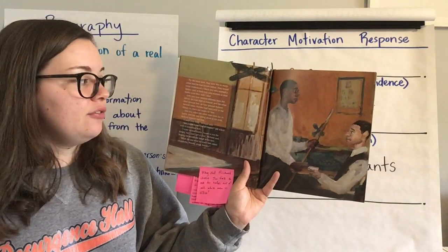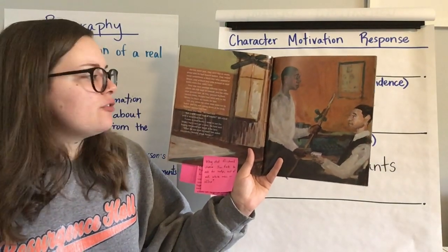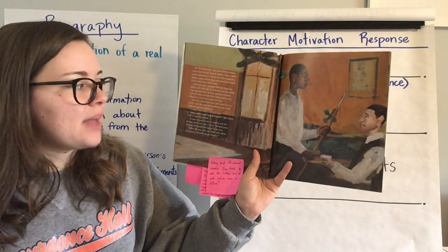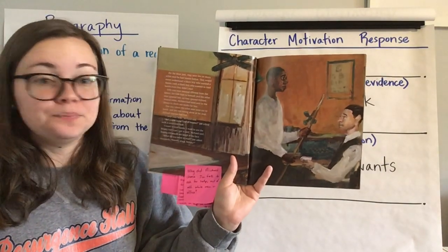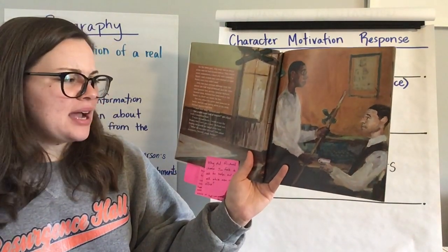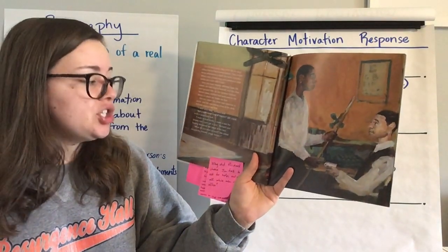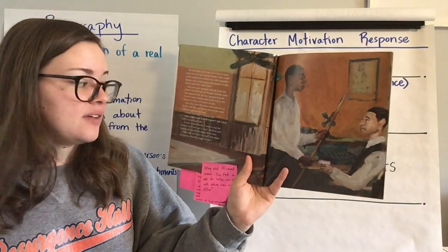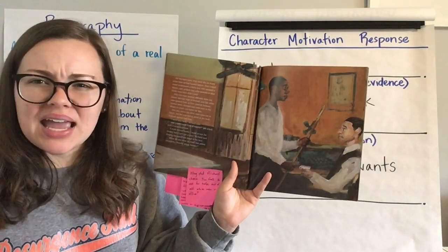Only one man seemed different from the others. Jim Falk kept to himself, and the other men ignored him as they ignored Richard. Several times, Richard had been sent to the library to check out books for him. One day, when the other men were out to lunch and Jim was eating alone at his desk, Richard approached him. 'I need your help,' Richard said. 'Are you in some kind of trouble?' Jim asked with a suspicious look. 'I want to read books. I want to use the library, but I can't get a card,' Richard said, hoping Jim would not laugh in his face. 'What do you want to read?' Jim asked cautiously. 'Novels, plays, history.'